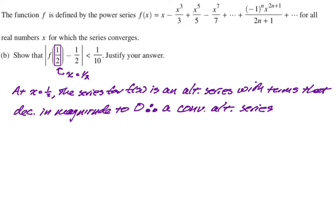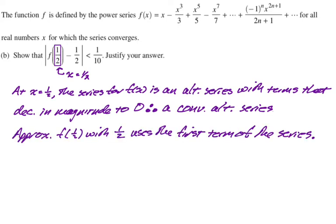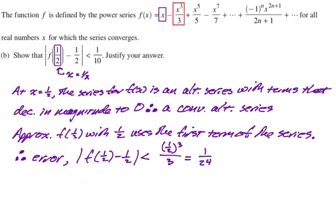All right. So, now, what is happening? Well, if we approximate f of 1 half with 1 half, right? So, we're using 1 half as our approximation of the sum of the series. That uses only the first term of the series, right? We're plugging 1 half in for x. Which means we're plugging 1 half in there. And we're saying we're done. That's our approximation. Well, if that's our approximation, the next term or the magnitude of the next term should be the maximum error. So, now, I just need to take 1 half and plug it in here and show that the value I get is less than 1 tenth. So, how do I write that? Well, I'm going to say, therefore, the error, which is the absolute value of f of 1 half minus 1 half, is going to be less than the magnitude of that term. So, I take 1 half and plug it in. And that gives me 1 over 24, which is definitely less than 1 over 10.